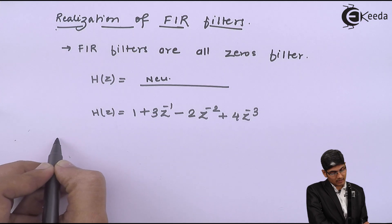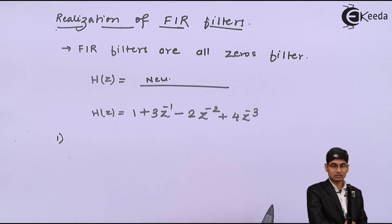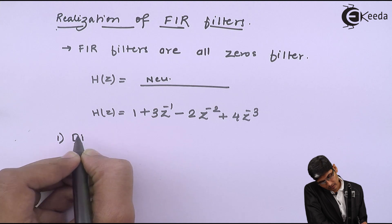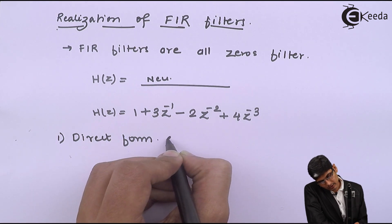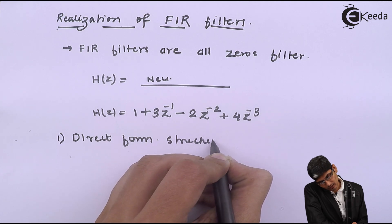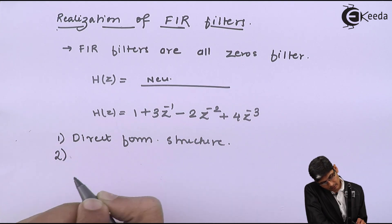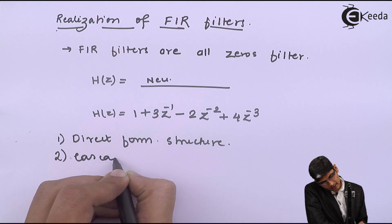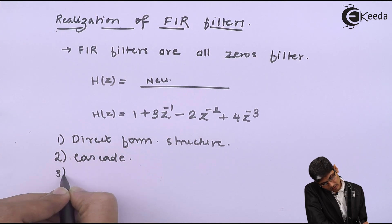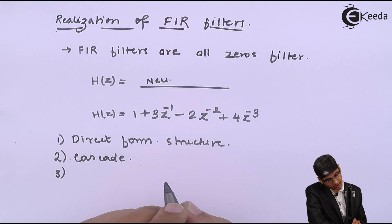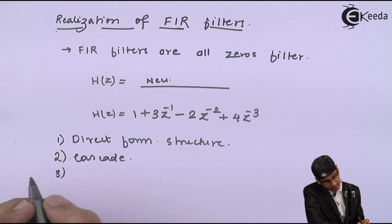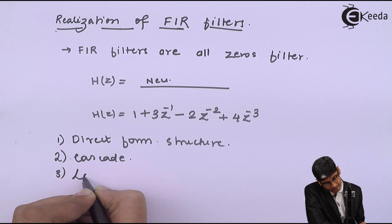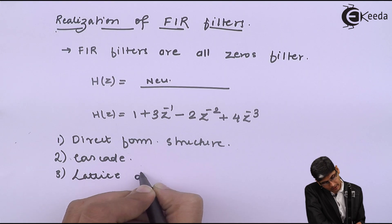There are basically three structures that we are going to see. One is the direct form structure. Second, we are going to see a cascade structure. Third, we are going to see a lattice diagram.